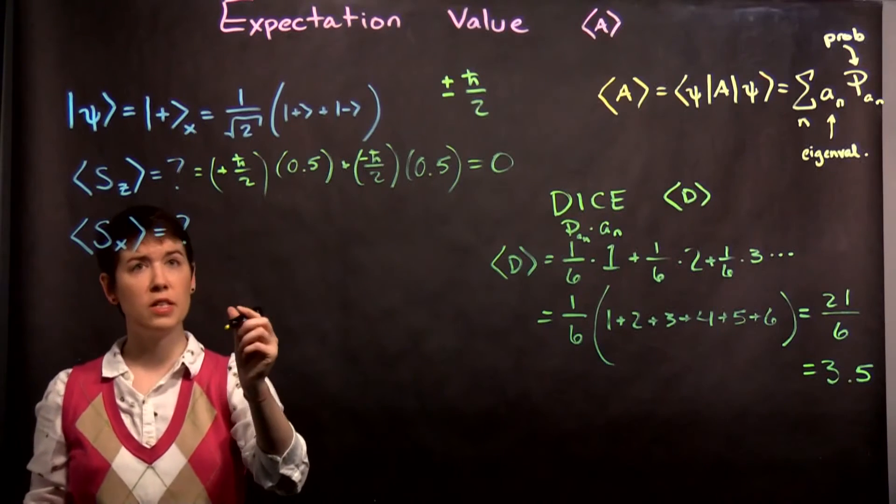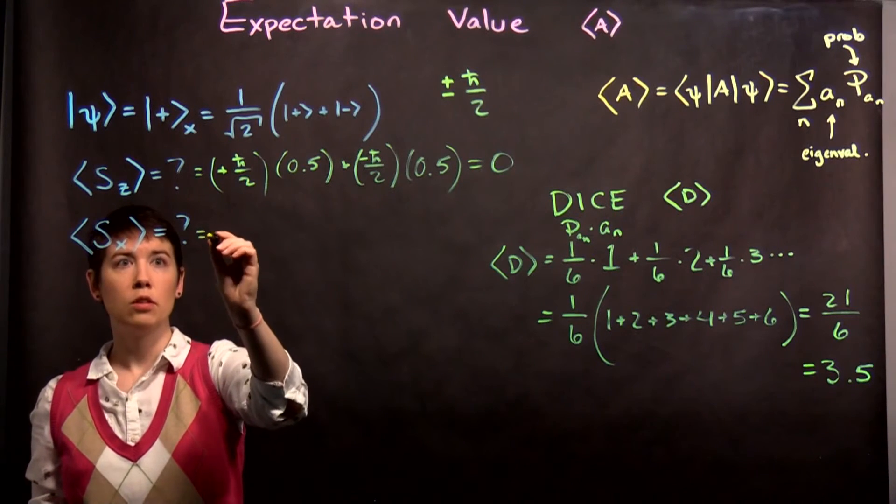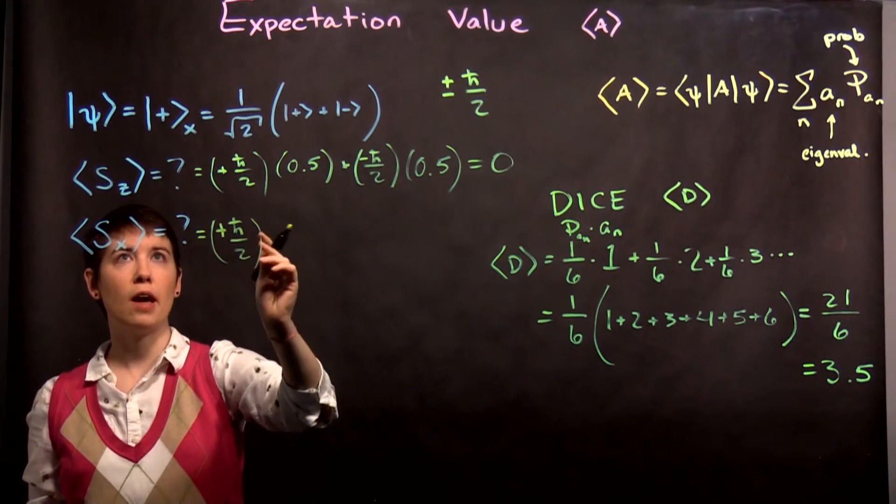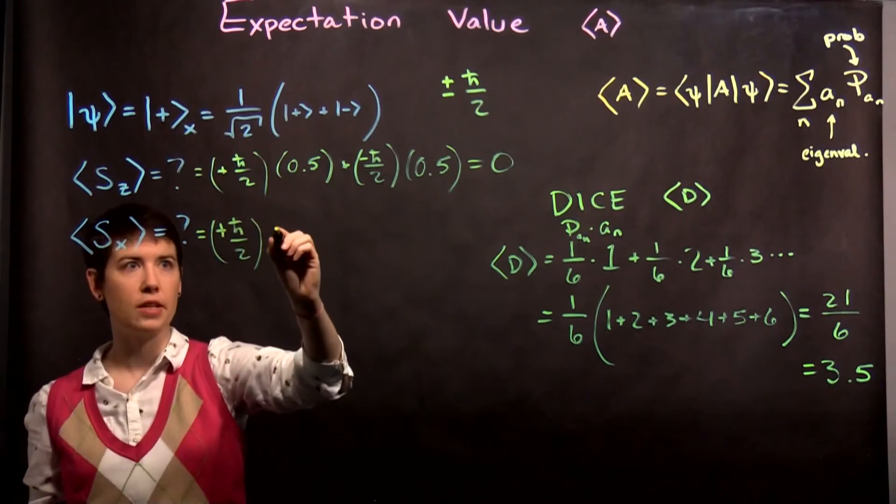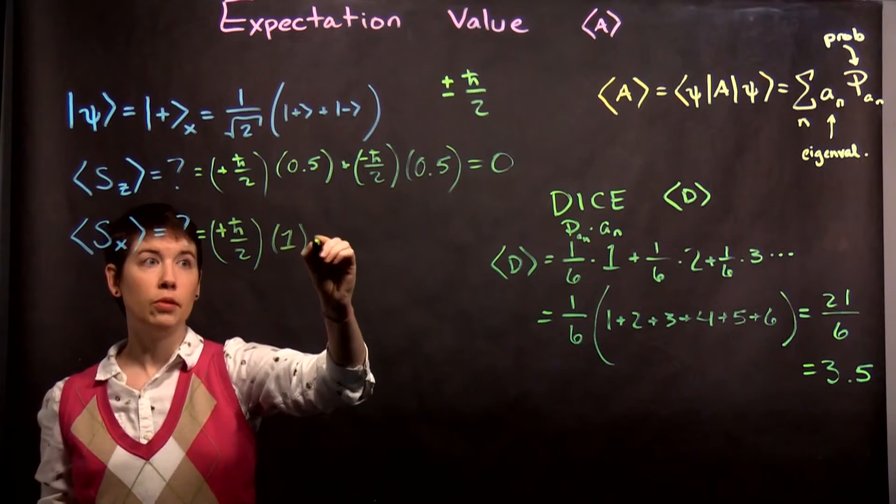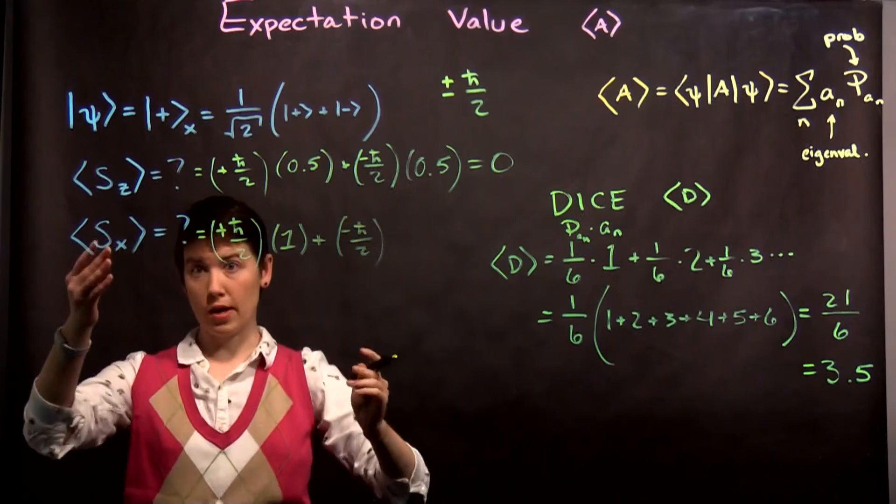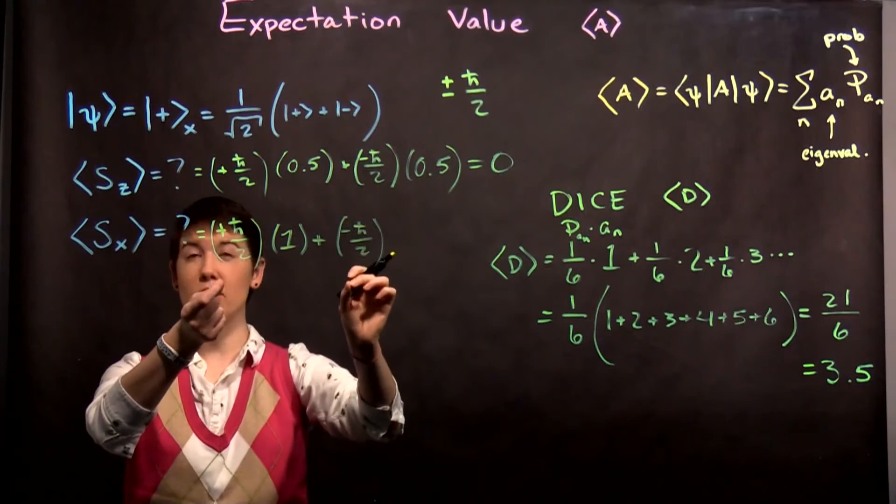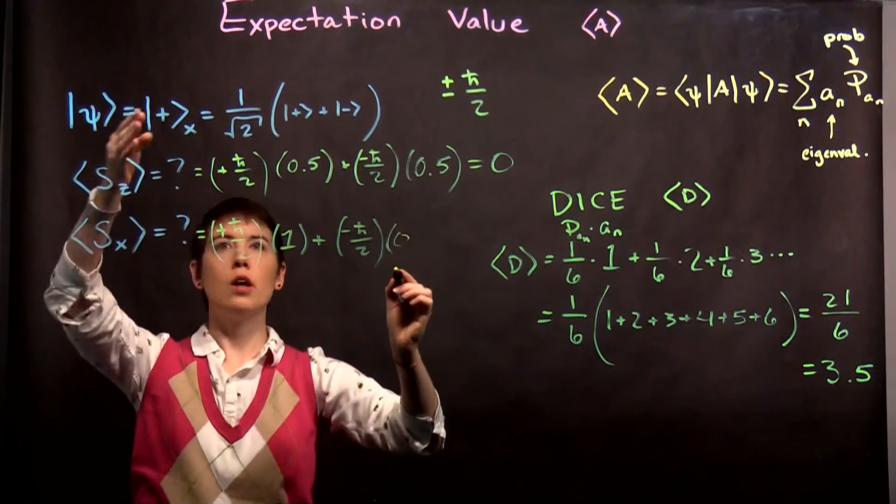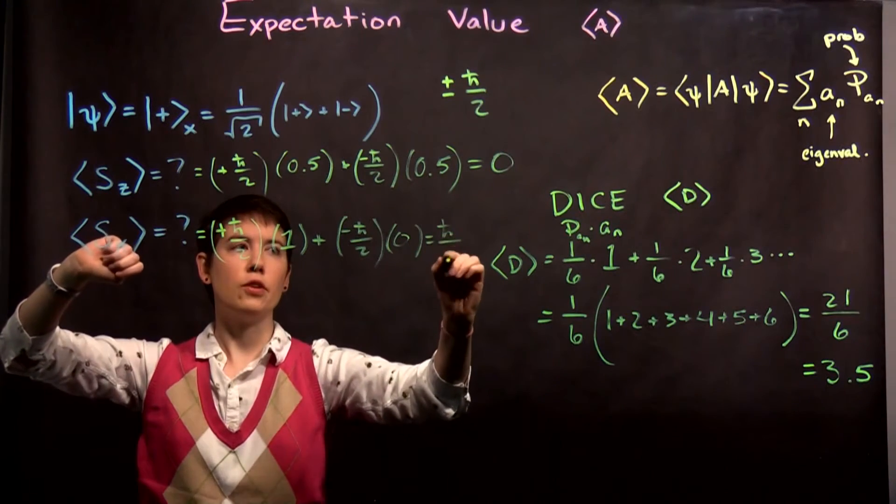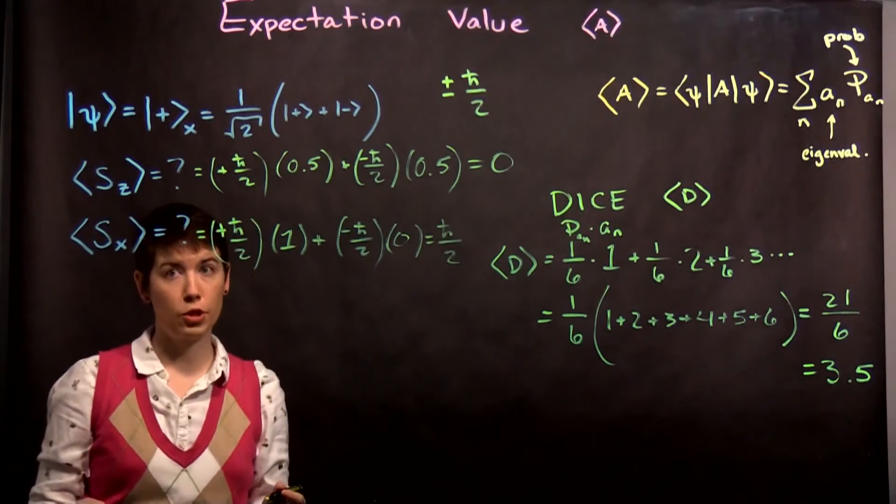What about spin in the x direction? Well, spin up. What probability does that have to happen? That's actually the definition of our state. So that's 1. Plus spin down in the x direction. We would still be measuring these eigenvalues. What's that probability there? 0. Because it's entirely spin up. So in this case, the expectation value is plus h-bar over 2.